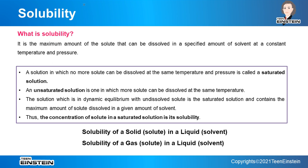Next is solubility. The difference between concentration and solubility is important. Solubility is the maximum amount of solute that can be dissolved in a specified amount of solvent at constant temperature and pressure. A solution in which no more solute can be dissolved is called a saturated solution; a solution in which more solute can still be added is called an unsaturated solution.